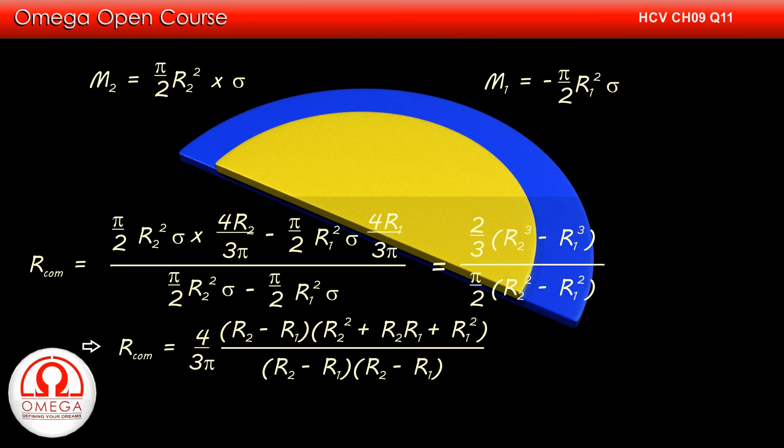R2³ - R1³ can be written as (R2 - R1)(R1² + R1R2 + R2²) and R2² - R1² can be written as (R2 + R1)(R2 - R1).